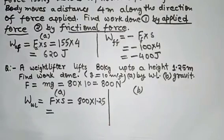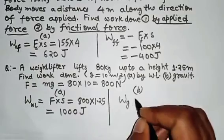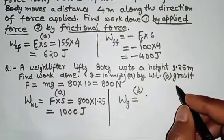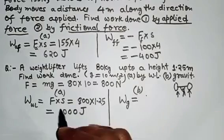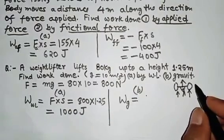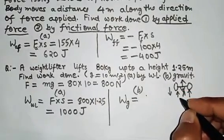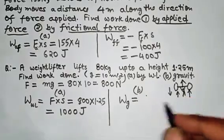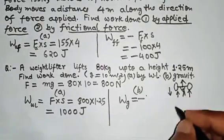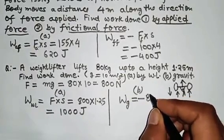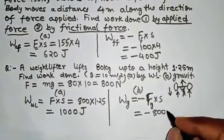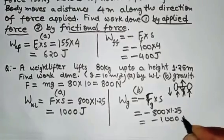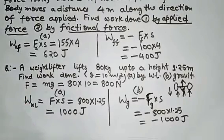That gives the value in Joules. For Part B — gravitational work done — the weightlifter applies force upward and displacement is also upward. But gravitational force acts downward while displacement is upward, so we put a negative sign. W_gravity = −F_gravity × displacement = −800 × 1.25 = −1000 Joule. So be very sure about which force is doing the work.